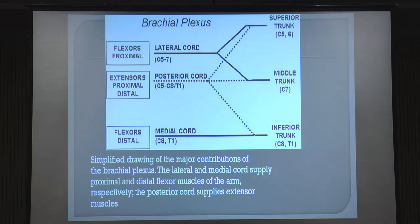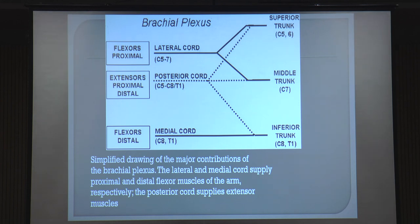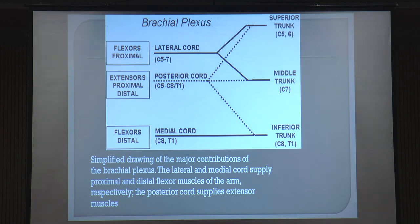Why am I telling this? This will help you when you are doing PNS. It's all about the responses. So if you correctly judge the response, you can very well define which cord you are stimulating. The posterior cord supplies all the proximal extensors. The medial cord supplies the distal flexors. So if you are getting a finger flexor response in all fingers, it means you are stimulating the medial cord. If you are not getting a finger response but are getting wrist flexion, it means you are stimulating the lateral cord. Any extensor response means you are stimulating the posterior cord.